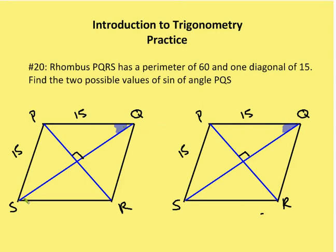One is where QS itself is going to be 15 units. In that case, we have an equilateral triangle. In an equilateral triangle, the measures of all the angles are 60 degrees, so we'll identify angle PQS as 60 degrees. Now we need to find the sine of angle PQS when PQS is 60 degrees.